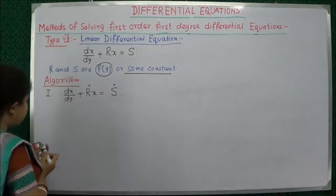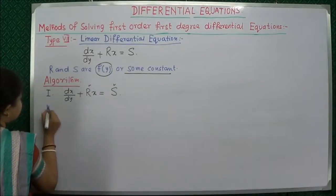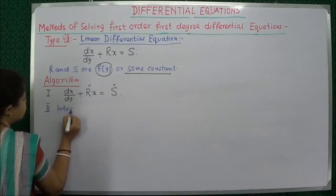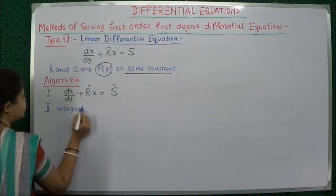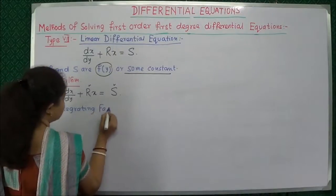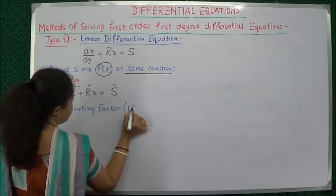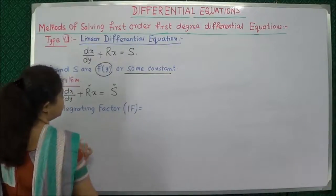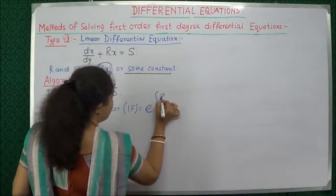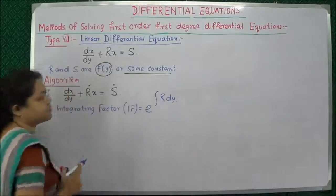In the next step we have to find the integrating factor, which is denoted as I.F., equals e to the power of the integration of R dy.